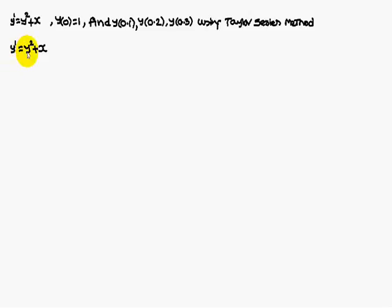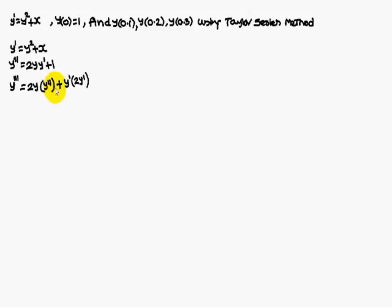So, y dash equals y squared plus x as given. y double dash is 2y·y dash, and x differentiation is 1. Next, find y triple dash — here you apply the uv method. Therefore: 2y·y double dash, plus y dash into 2y dash. One differentiation is 0. Simplifying, y triple dash equals 2y·y double dash plus 2(y dash)².